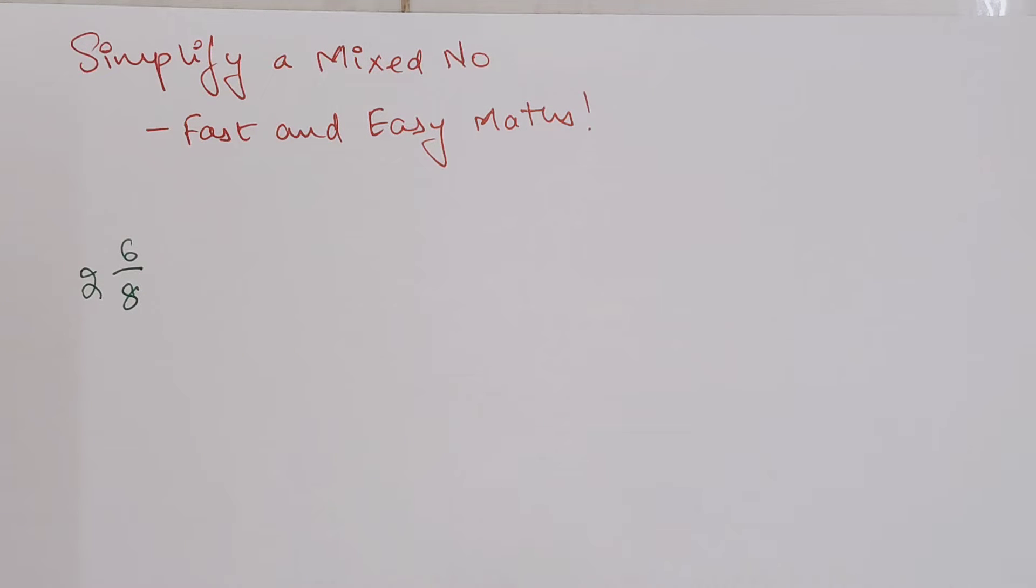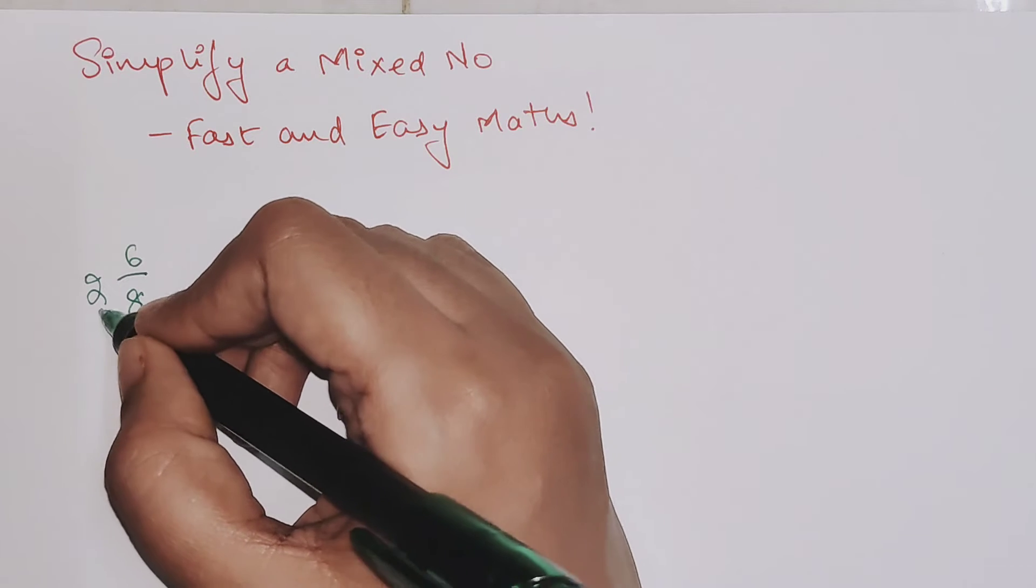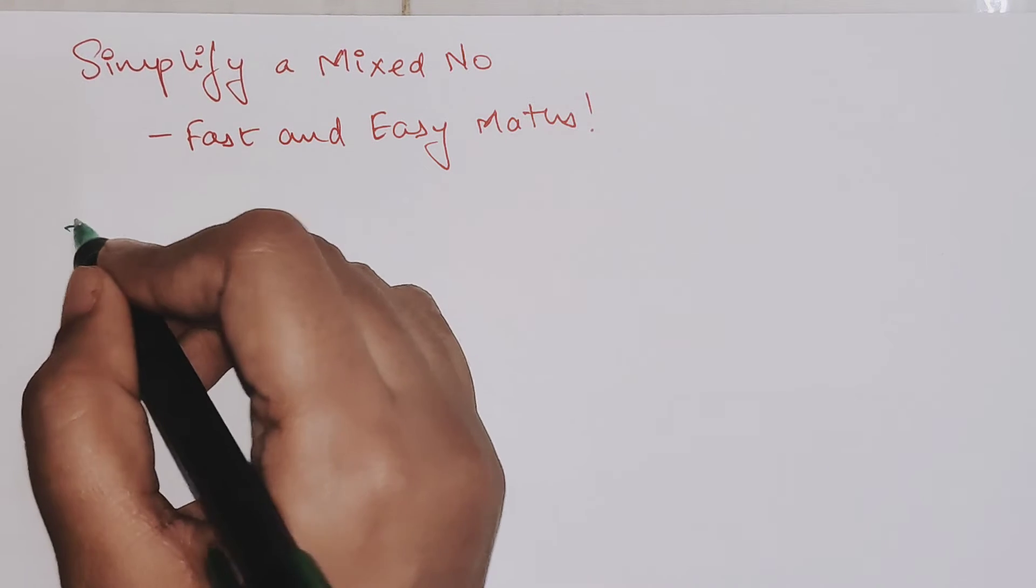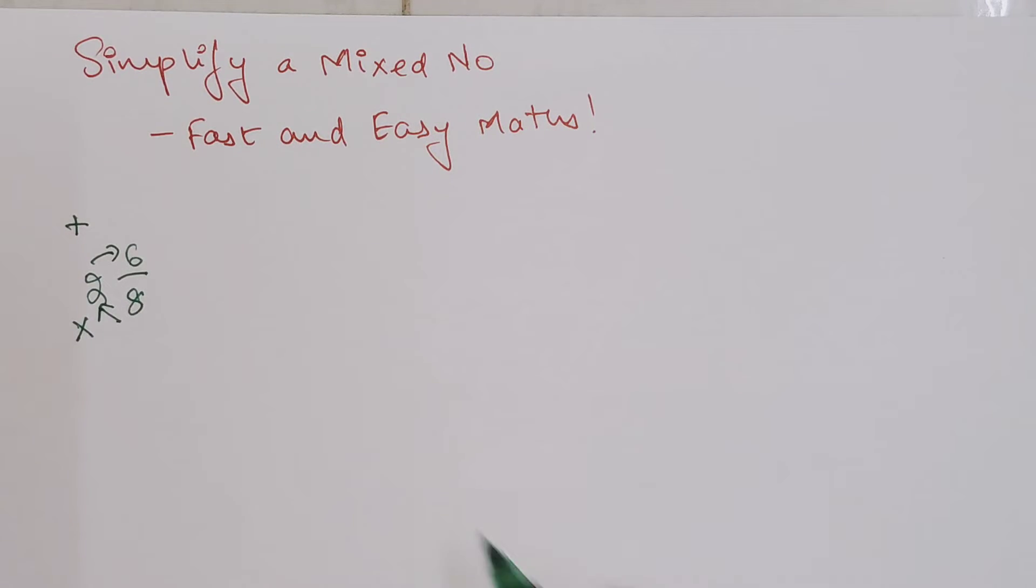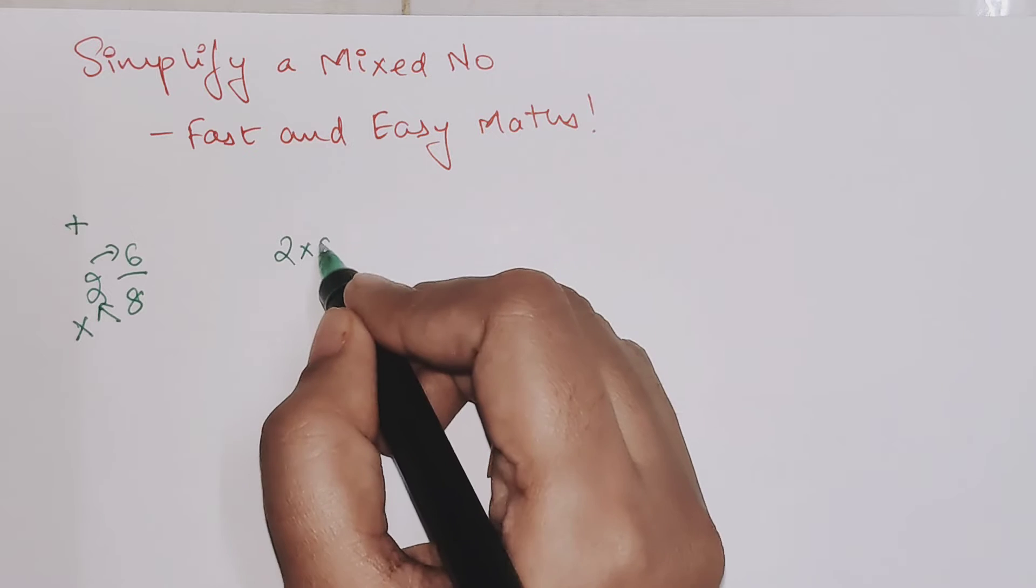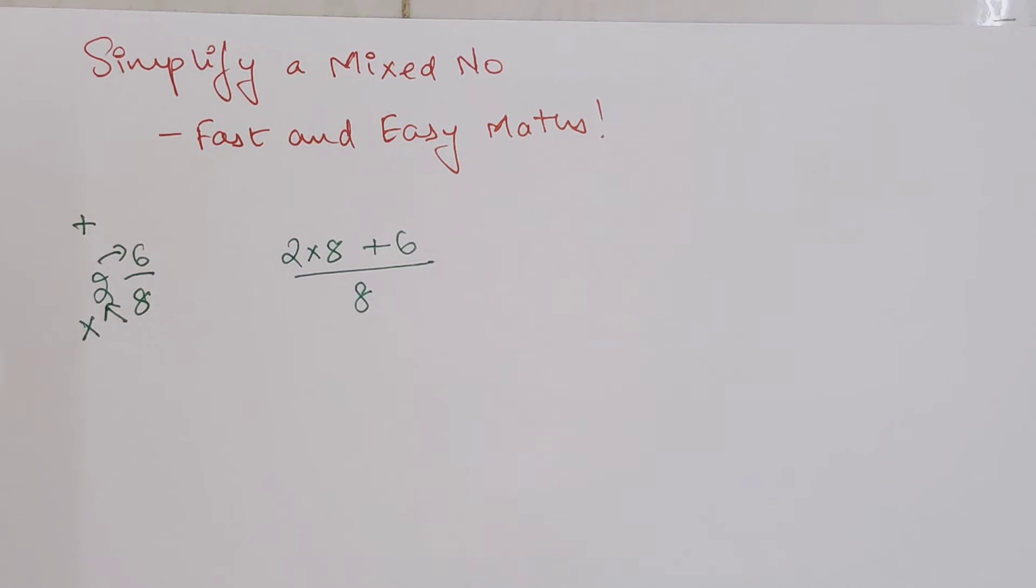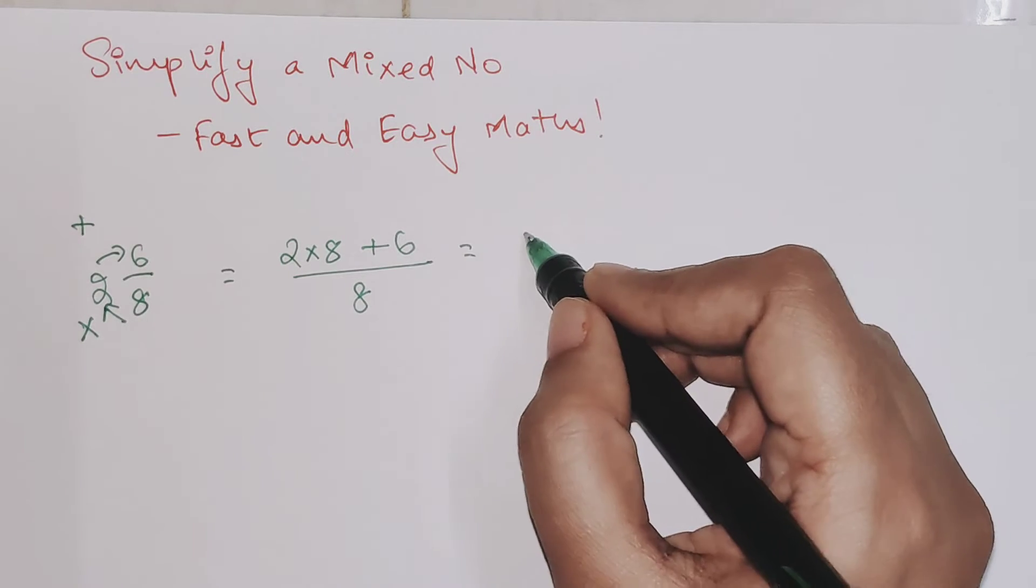The traditional method is: first you do the product and then you do addition. Basically, we do 2 times 8 plus 6 upon the denominator. The denominator always gets carried forward, so this now comes out to be 22/8.